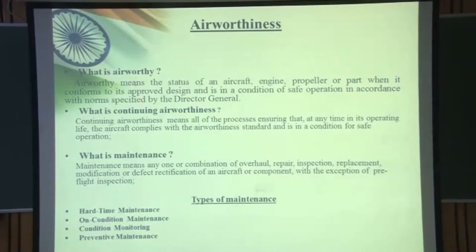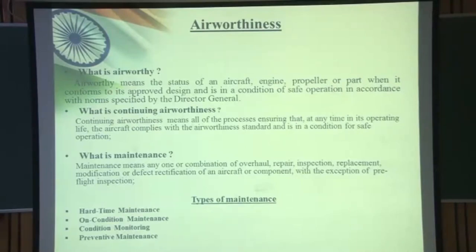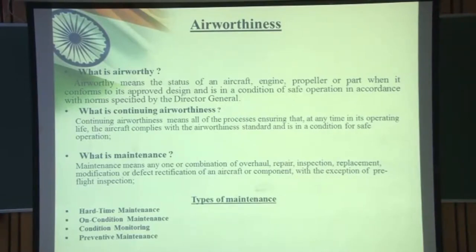Continuing airworthiness means all of the processes ensuring that at any time in its operating life, the aircraft complies with the airworthiness standard and is in a condition for safe operation. The aircraft has to be maintained in continuing airworthiness — at any point of time in its operating life, it has to comply with all requirements specified by the manufacturer and regulatory authority, maintained as per the approved type design and in a condition for safe operation at all times.